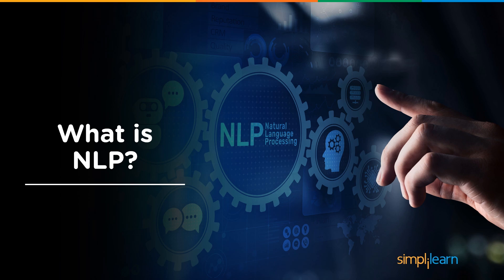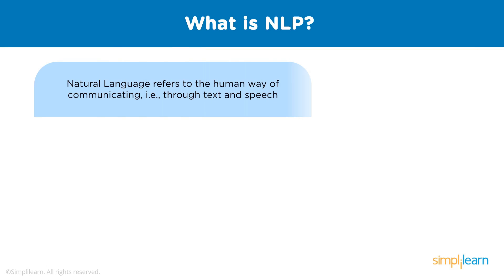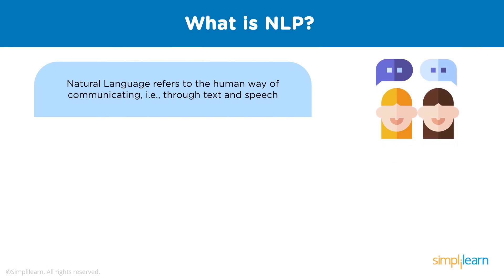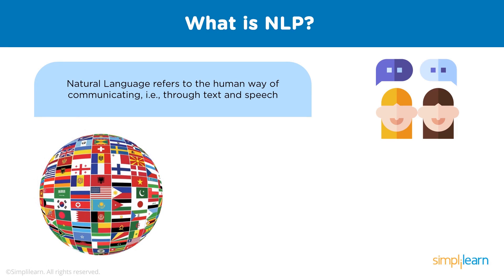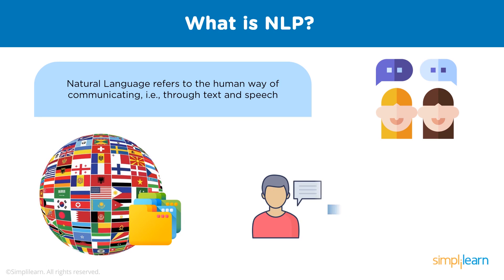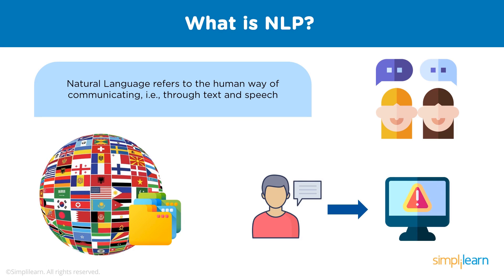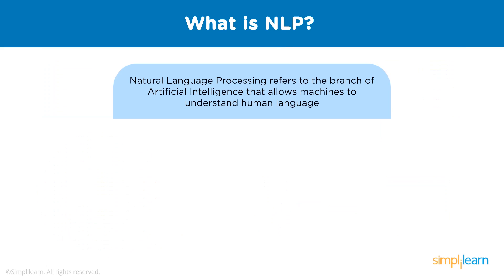Before we talk about NLP, let's talk about how humans interact with each other. Humans communicate mostly via speech or text to convey intent. This human way of communicating is known as natural language. Around the globe, many languages are spoken and messages are shared every single day. All these conversations, feedbacks, and messages are data in themselves — extremely valuable data. However, this data is not useful to computers, as machines communicate using ones and zeros, not words.